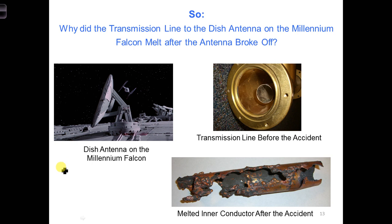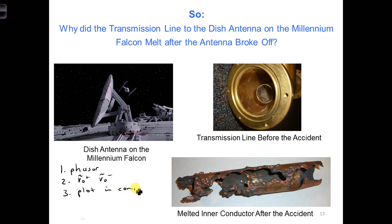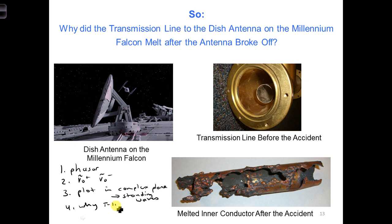So, to summarize: 1. What a phasor is. 2. What the positive and negative phasors represent. 3. How we can plot them in a complex plane, and how we can get what's called standing waves. And 4. Why the transmission line melted.